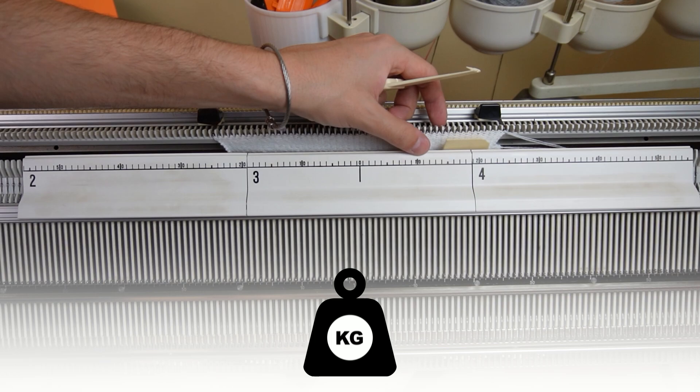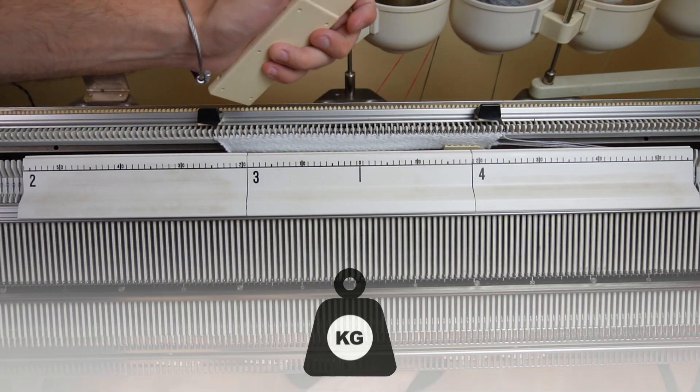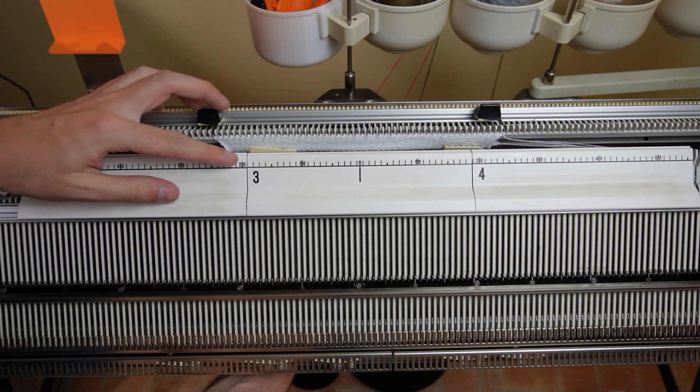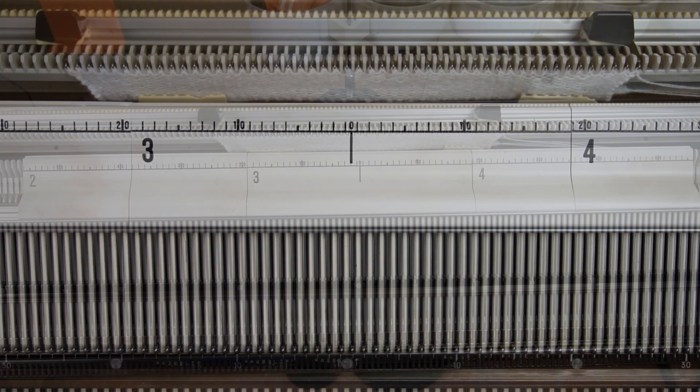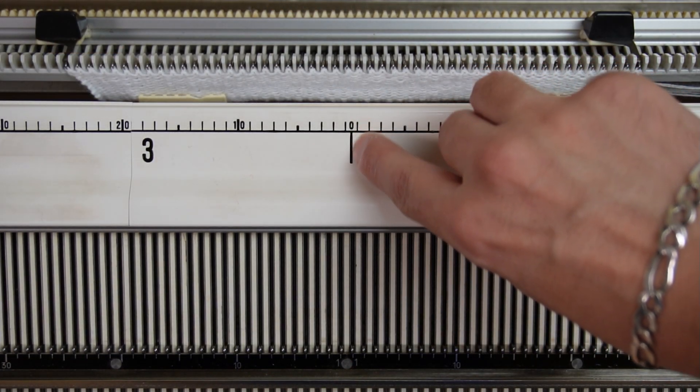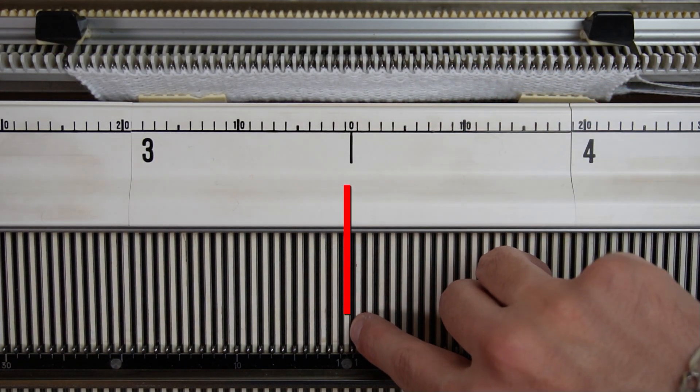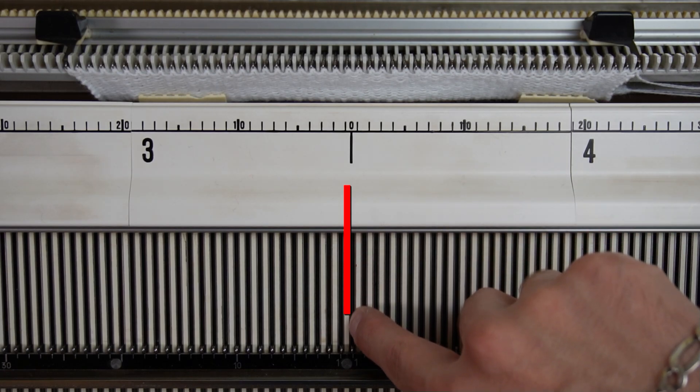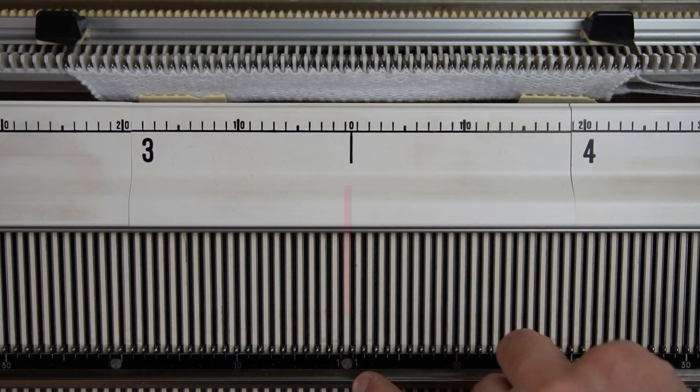Now I will attach two weights to the knitting. Once again check if the bed covers are positioned correctly. The black line in the center should go between the channels of the first needle to the left and the right one.